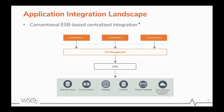Before jumping into EI7, let me quickly recap the modern application integration landscape. We can see there are two main architectural styles. One is the centralized ESB-based architecture. In this picture there are different kinds of systems — a finance system, a shipping system, an inventory system, a payment gateway. If you want to integrate these systems, one approach is point-to-point, but that approach is not very maintainable.